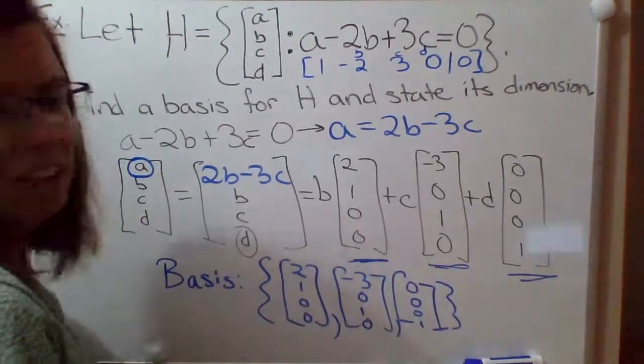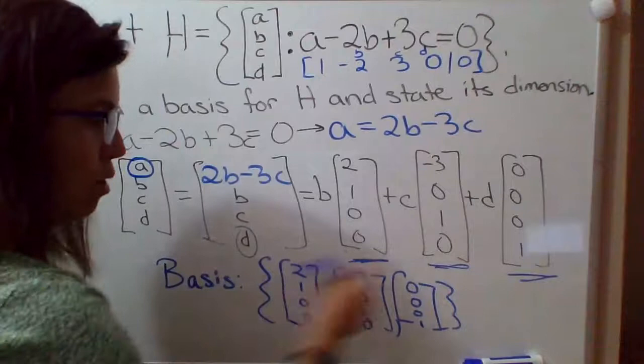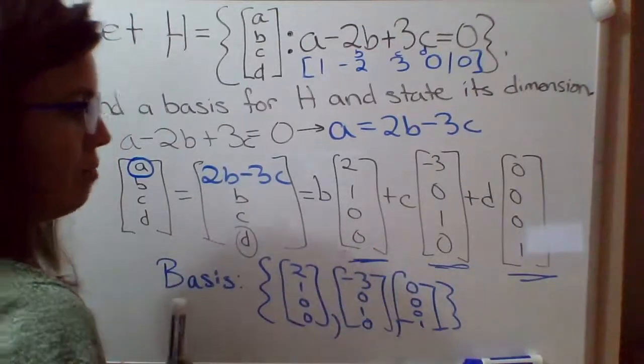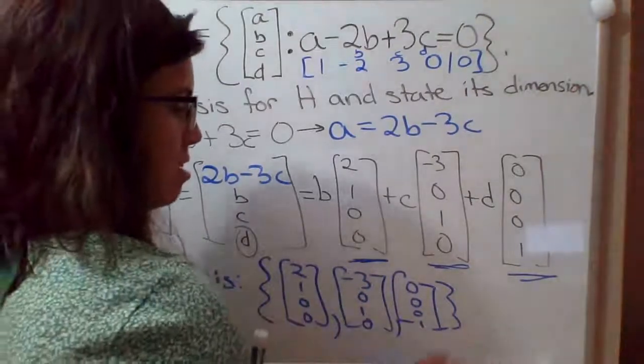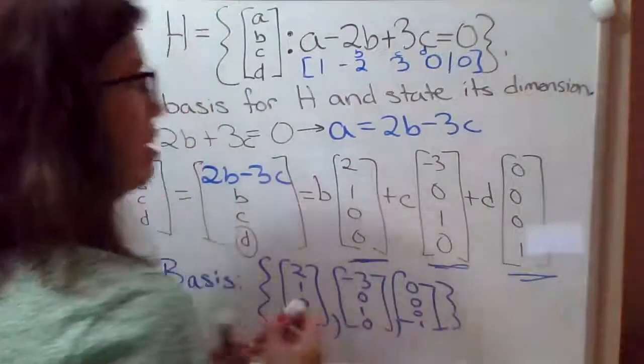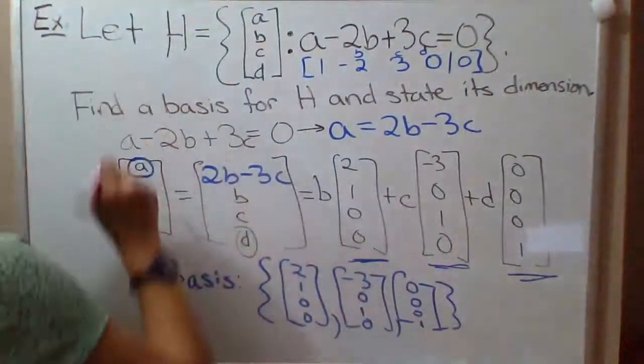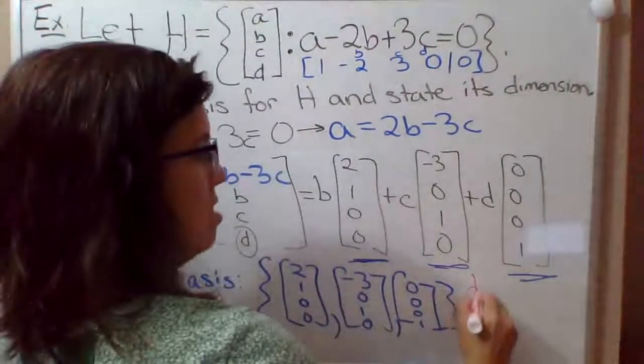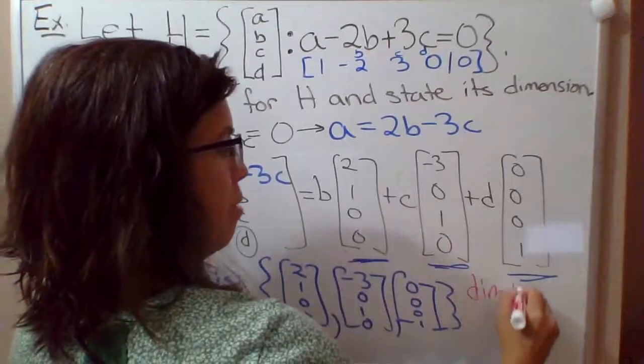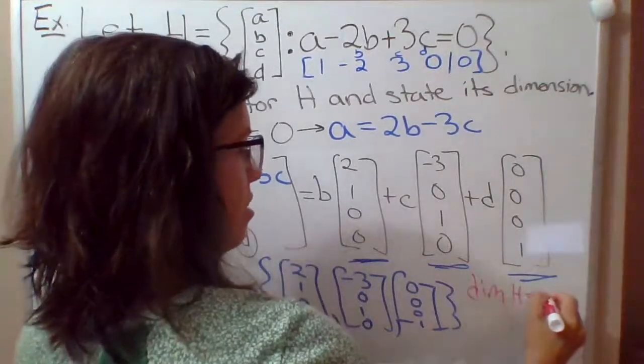So once you have a basis, finding the dimension is just a matter of counting. I have one, two, three vectors in that basis. So I'm just trying to get another color to write this. That tells us that the dimension of this subspace H is 3.